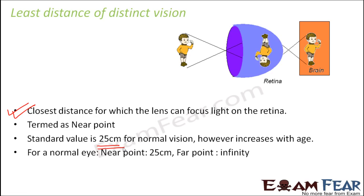For a normal eye, the near point is 25 centimeters and the far point is infinity. The far point can be anywhere because if the object is far away — even at infinity — the lens can adjust itself so that the image is formed at the principal focus and the principal focus lies on the retina. So the far point could be infinity, but the near point has to be 25 centimeters. With this, we get an idea about how our eyes produce images of objects and then how our brain interprets those images so that we can see the objects as they are.